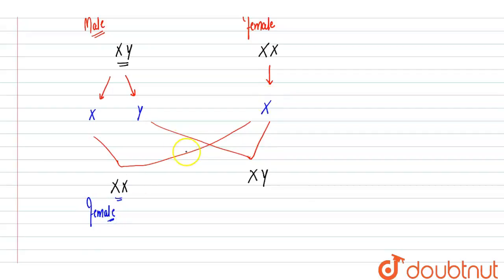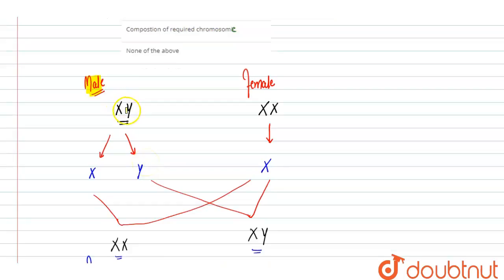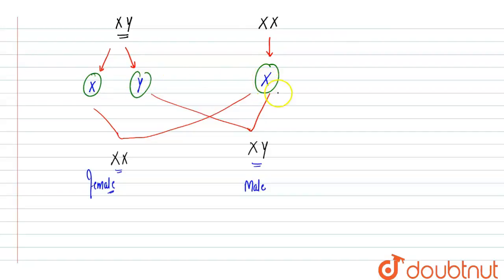XX means that is a female. If the X chromosome of the male combines with the female's X, the zygote will be female. If the Y chromosome of the male combines with the female's X, that will be male. So in either case, determination is by the male — the male's genetic content, that is the sex chromosome, determines whether the zygote will be female or male.